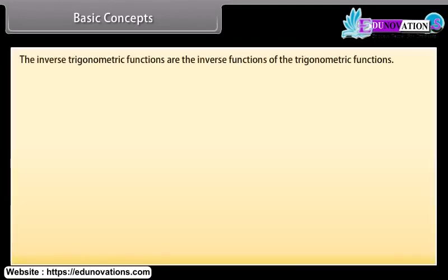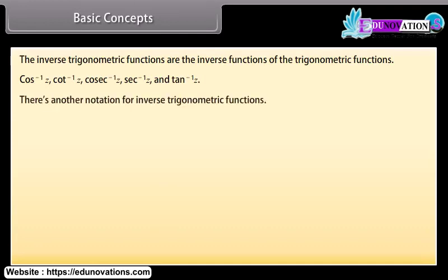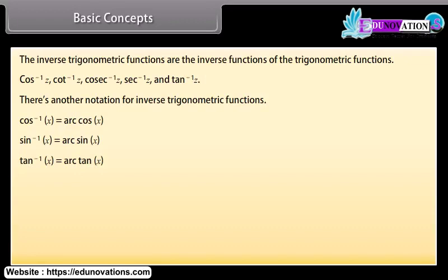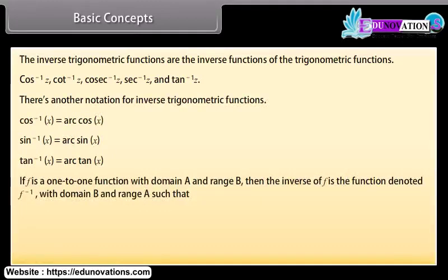The inverse trigonometric functions are the inverse functions of the trigonometric functions. Another notation for inverse trigonometric functions is: cos⁻¹ x = arc cos x, sin⁻¹ x = arc sin x, tan⁻¹ x = arc tan x. Recall that if f is a one-to-one function with domain A and range B, then the inverse of f is the function f⁻¹ with domain B and range A, such that y = f⁻¹(x) if and only if x = f(y).